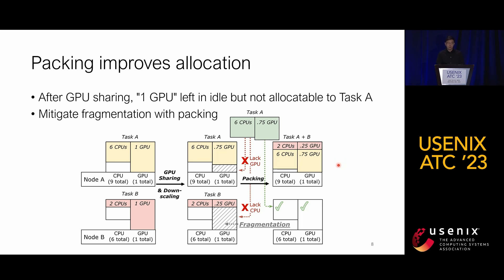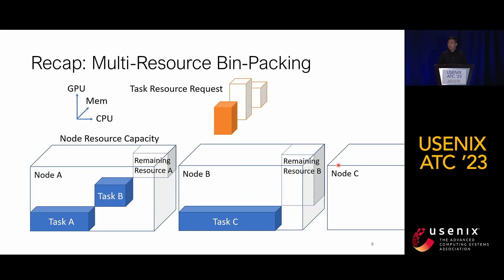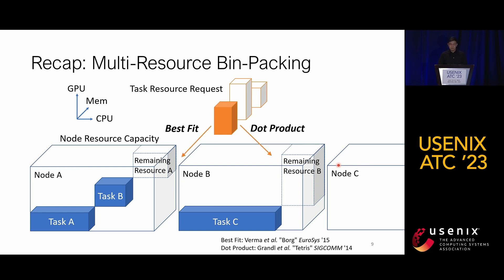Workload packing can mitigate such fragmentation by consolidating tasks A and B onto one node and freeing resources on the other. Classical bin packing approaches formulate the problem as multi-resource bin packing, where resources including CPU, memory, and GPU are represented as dimensions, with task requests and node capabilities shaped as cubes or higher-dimension vectors. Best fit is a commonly used heuristic in production systems like Google's Borg, assigning tasks to nodes with the least remaining resources. Dot products consider the alignment of task shape requests compared with the node's idle resources.